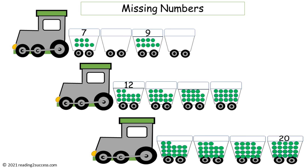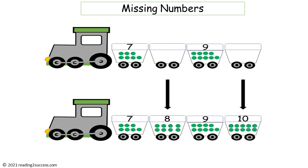In this activity have kids fill in the missing numbers, and in the first example also the number of green circles that the numbers represent. This is a completed example of the first problem. It begins with the number seven and shows what seven represents: seven green circles. Kids then need to fill in the next part with the number eight that follows seven and show what eight represents: eight green circles. The next part is done — nine is written for them with nine green circles. Then they must fill in the next part with the number that comes after nine, which is ten, and what it represents: ten green circles. And this is a completed example.